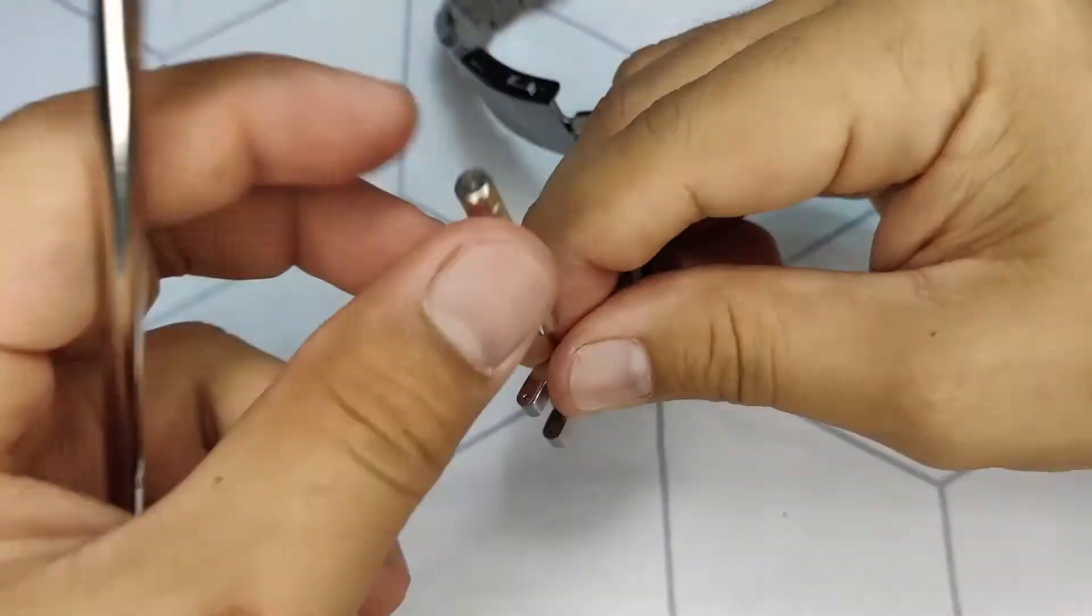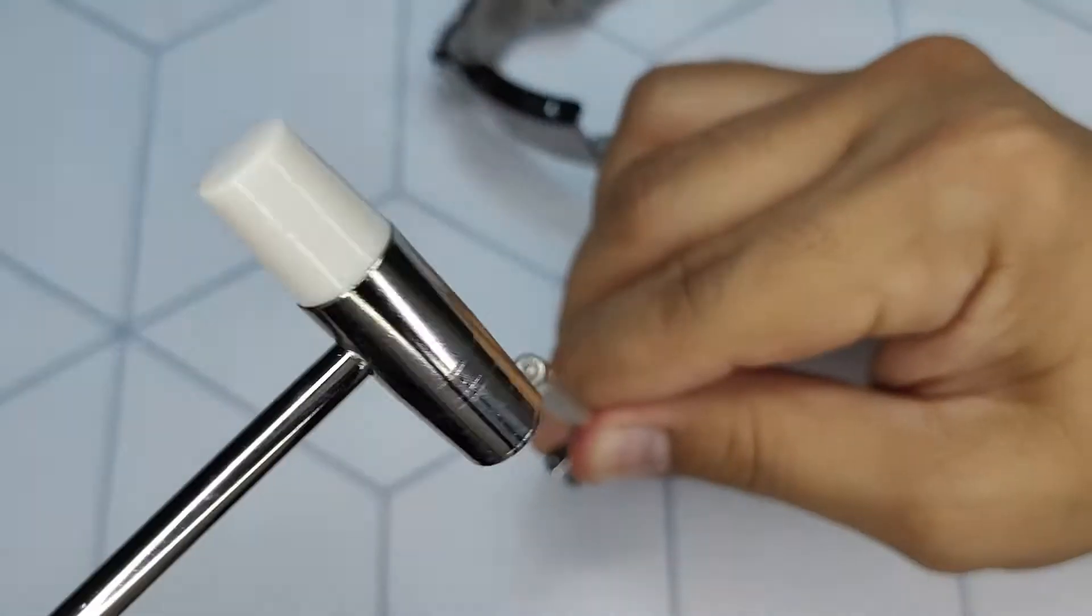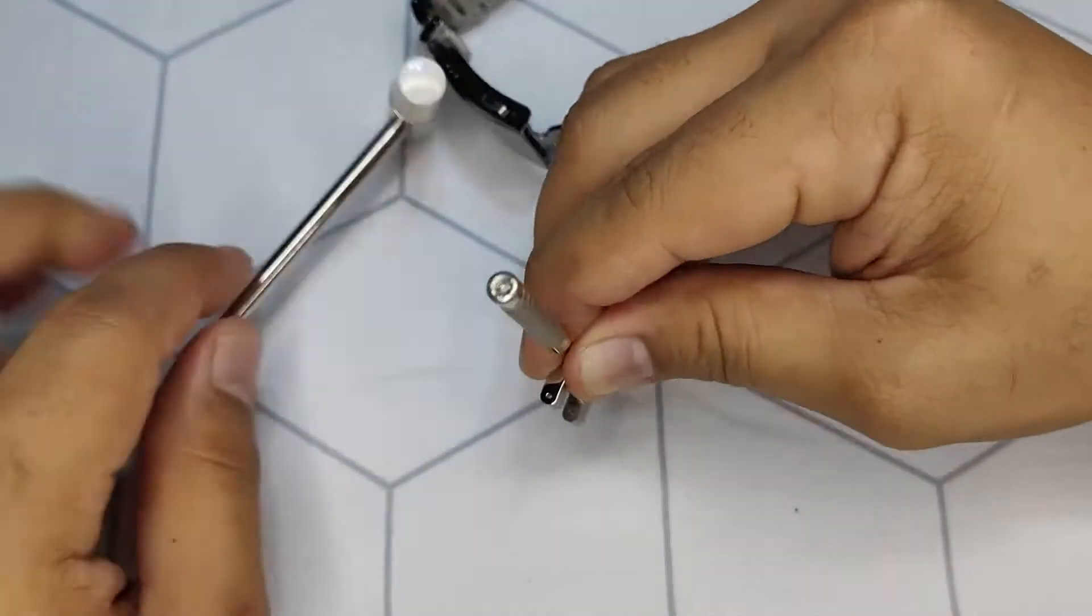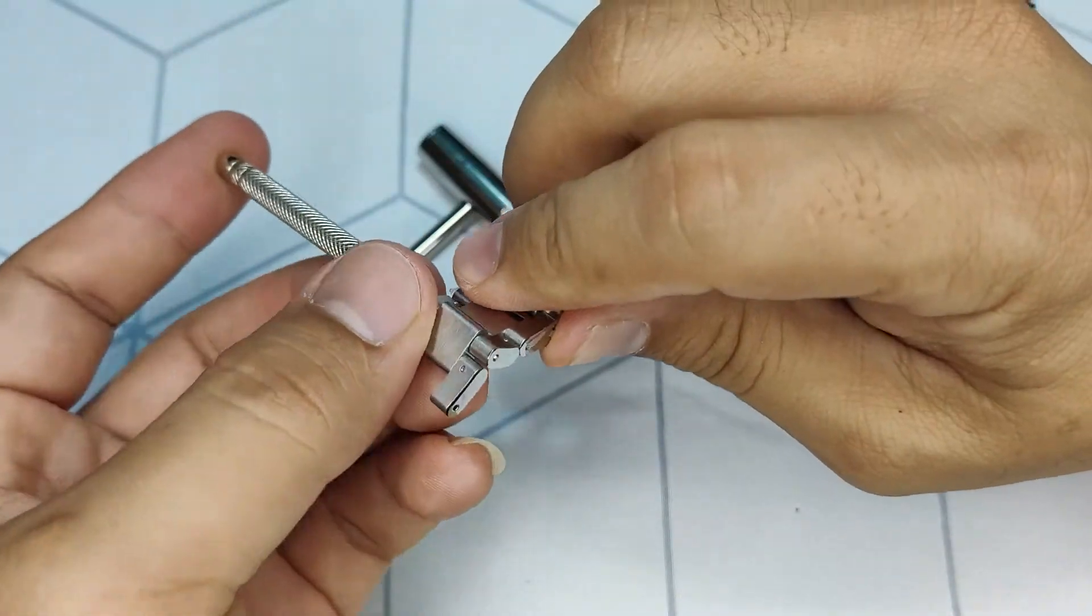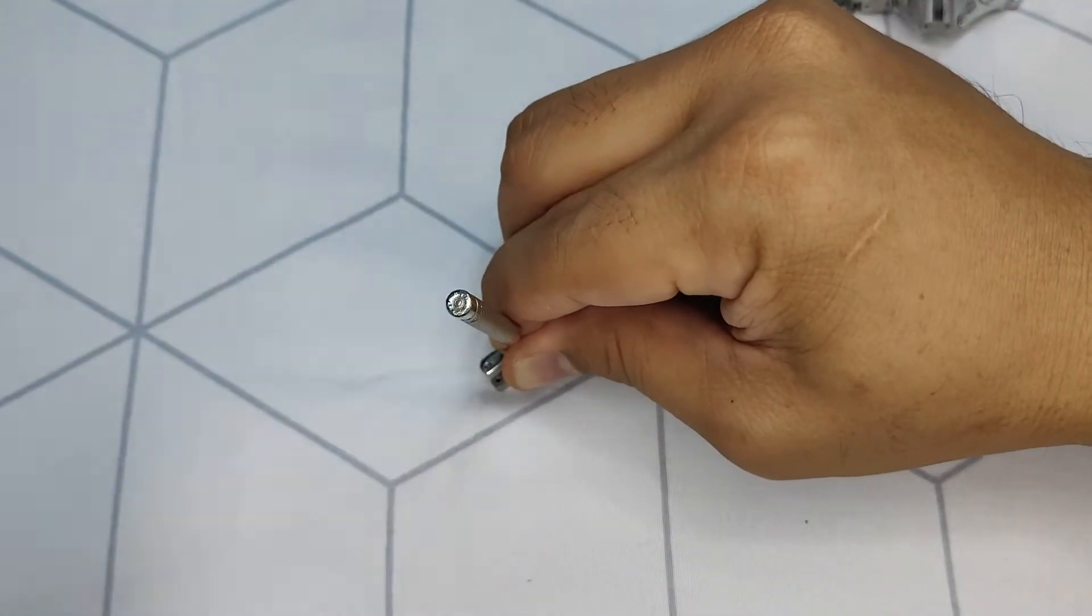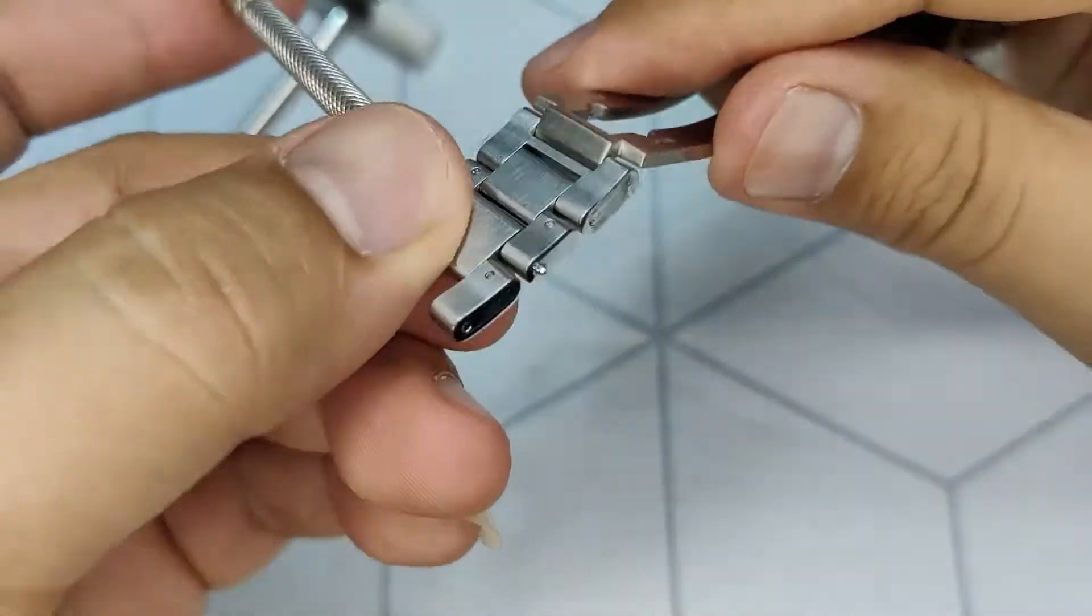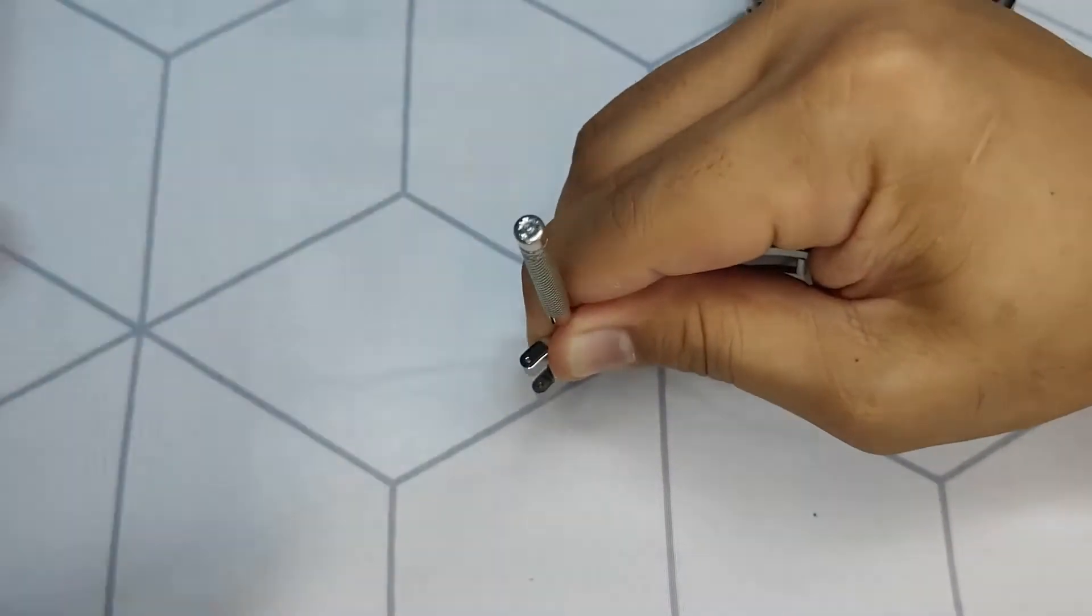If you don't have these tools, you can do this process using a thumbtack and screwdriver handle as the hammer. Continue until the pin comes out the other end. This may take some time and a few strikes, but it will come out little by little.